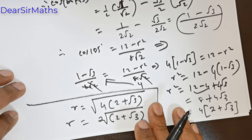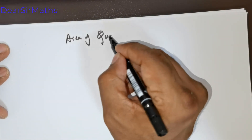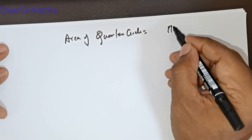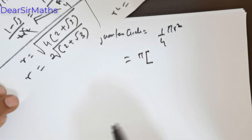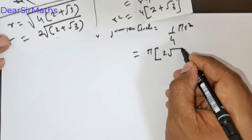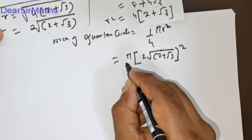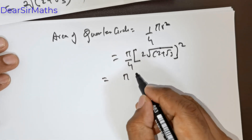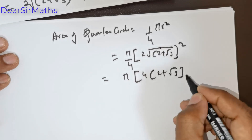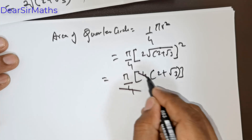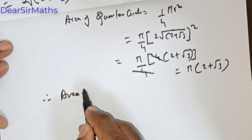I need the area of the quarter circle. Area of quarter circle equals (1/4)πr². Substituting R equals 2√(2 + √3): r² equals 4(2 + √3), and dividing by 4 gives π(2 + √3). So the area of the quarter circle is π(2 + √3).